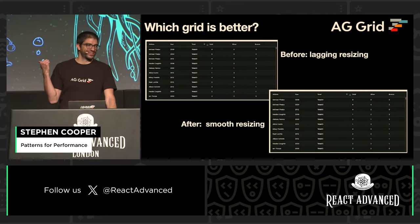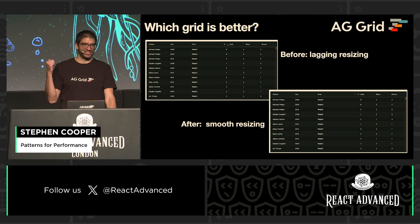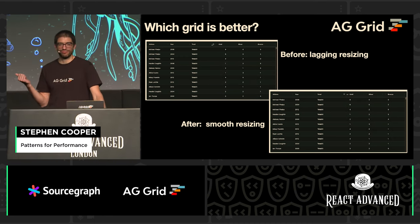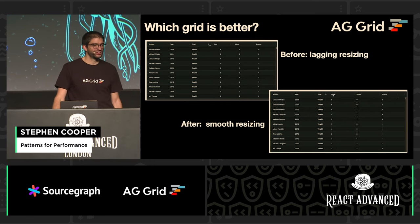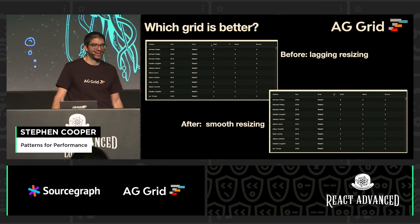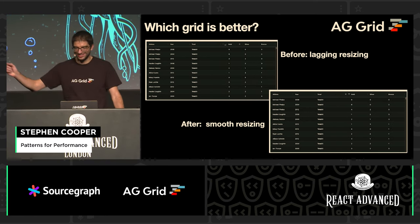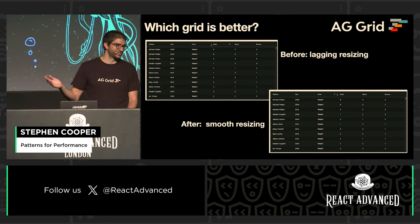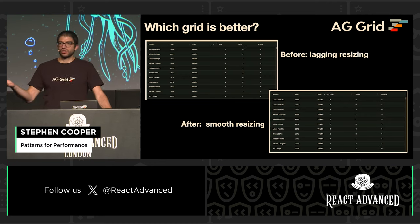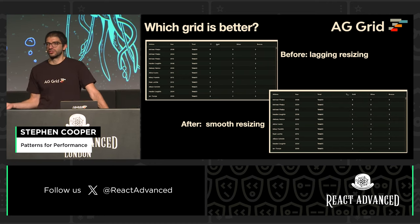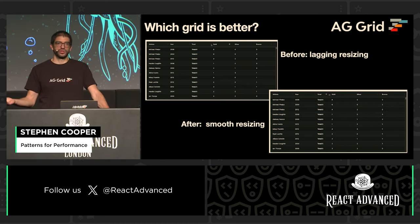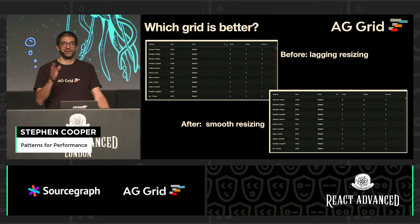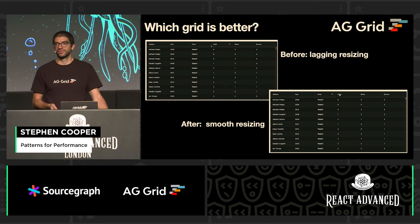I work for AG Grid, so there's going to be some grids featured in this talk. Can you see which of these grids is better? We've got the top one where you're resizing and it's jumping along, or the bottom one where you've got smooth resizing. It's obvious which one users would want to use, and this is something we're going to dive into and explain how we solved this issue.